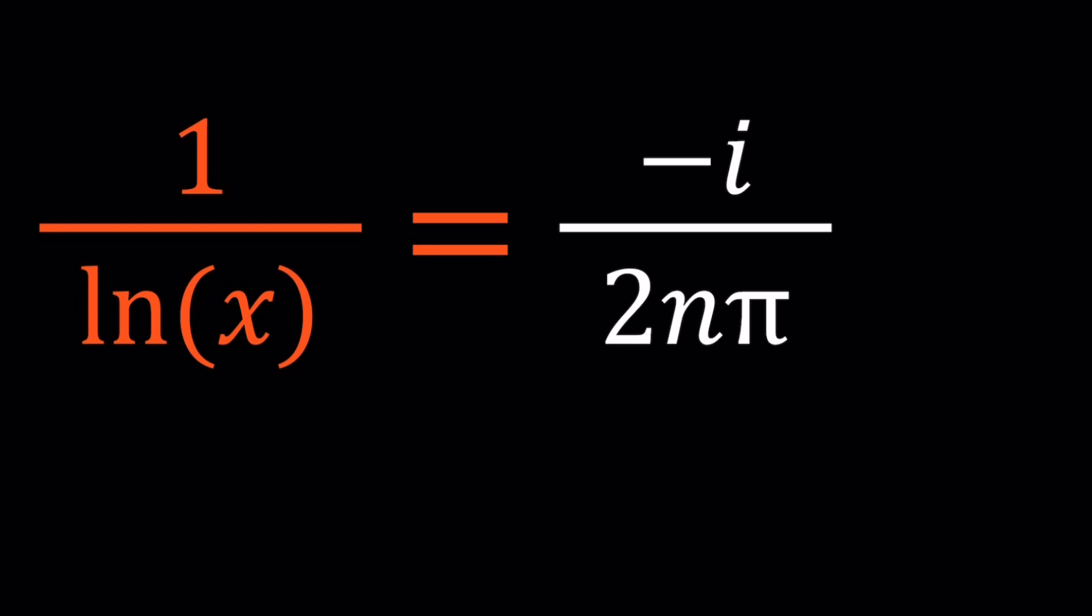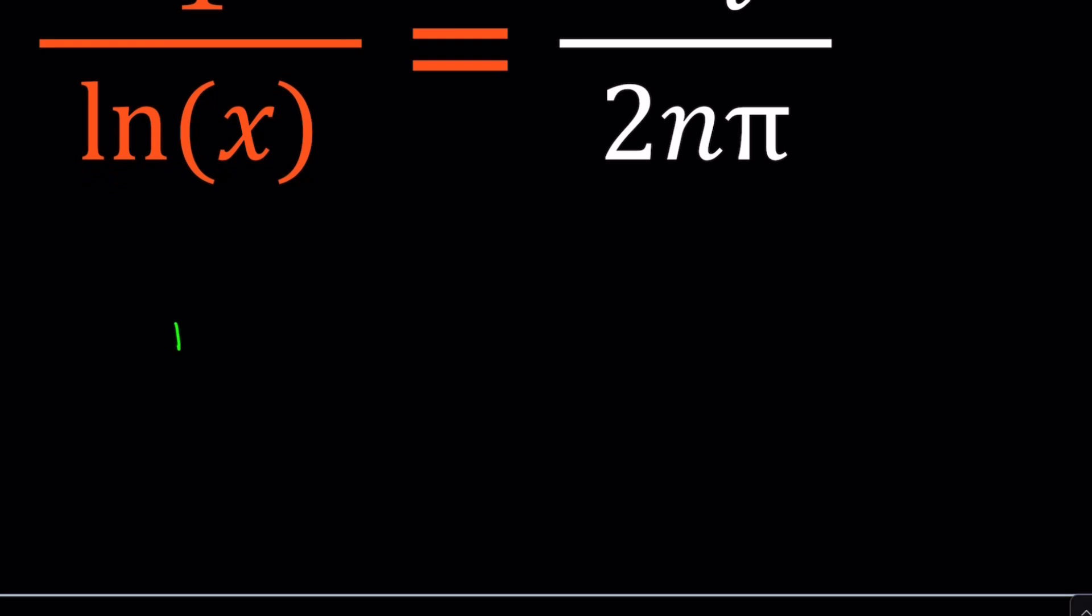So now, this is a log equation, but we're going to turn it into an exponential equation. You will see in a little bit how this goes. So first of all, I want to get ln(x), not the reciprocal of ln(x). So let's go ahead and flip both sides.